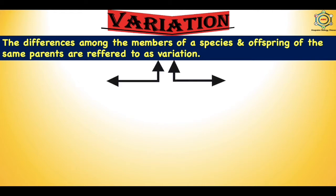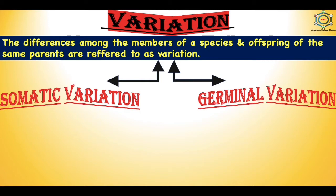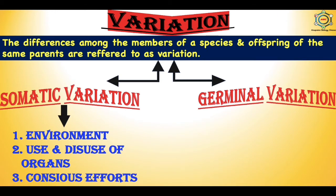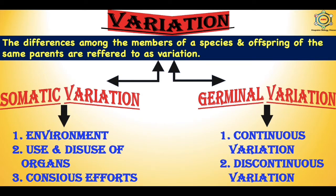Variation is of two types on the basis of the nature of cells affected: the first is somatic variation and the second is germinal variation. Somatic variation is affected by three factors: environment, use and disuse of organs, and conscious efforts. Germinal variation is of two types: continuous variation and discontinuous variation.